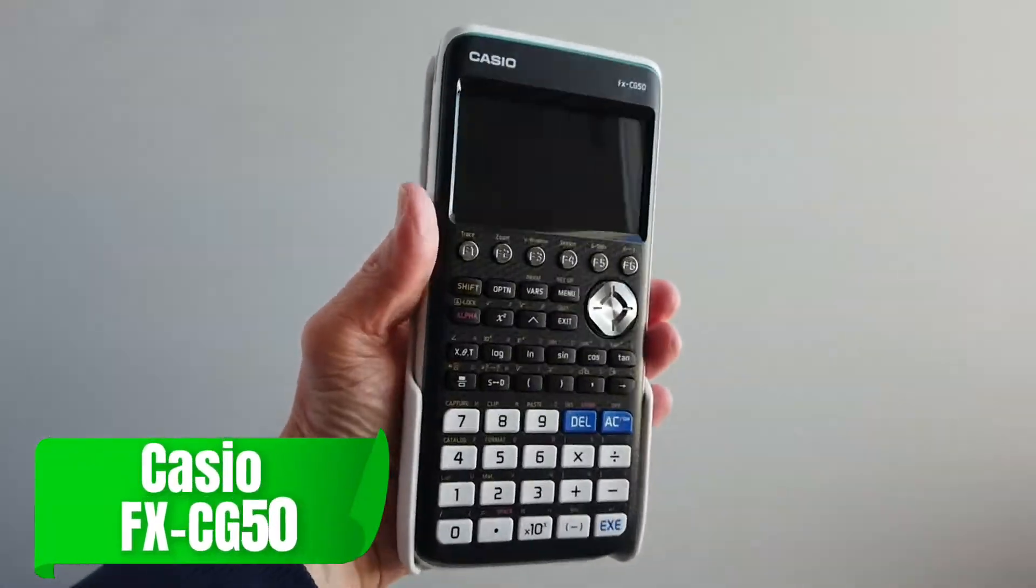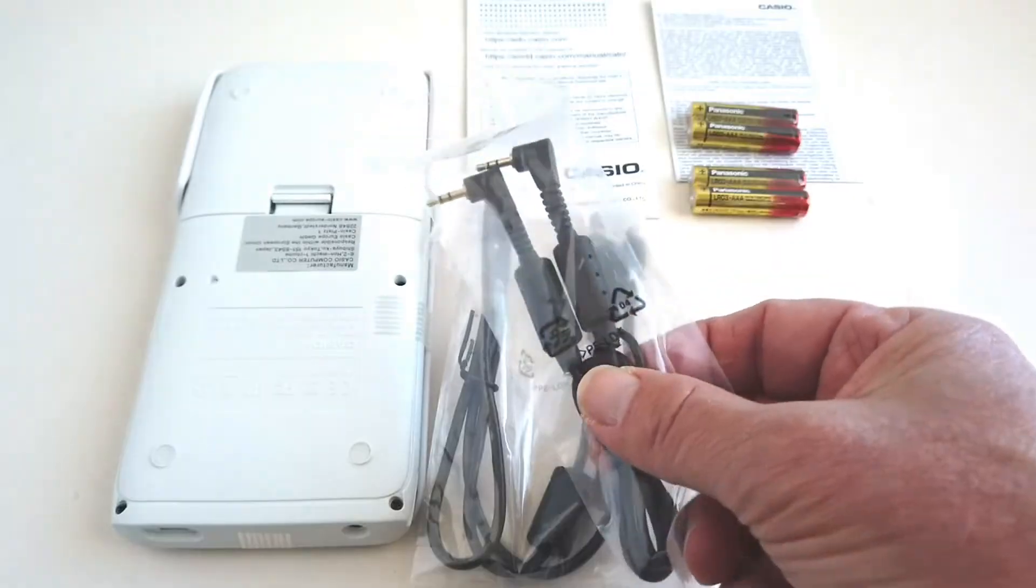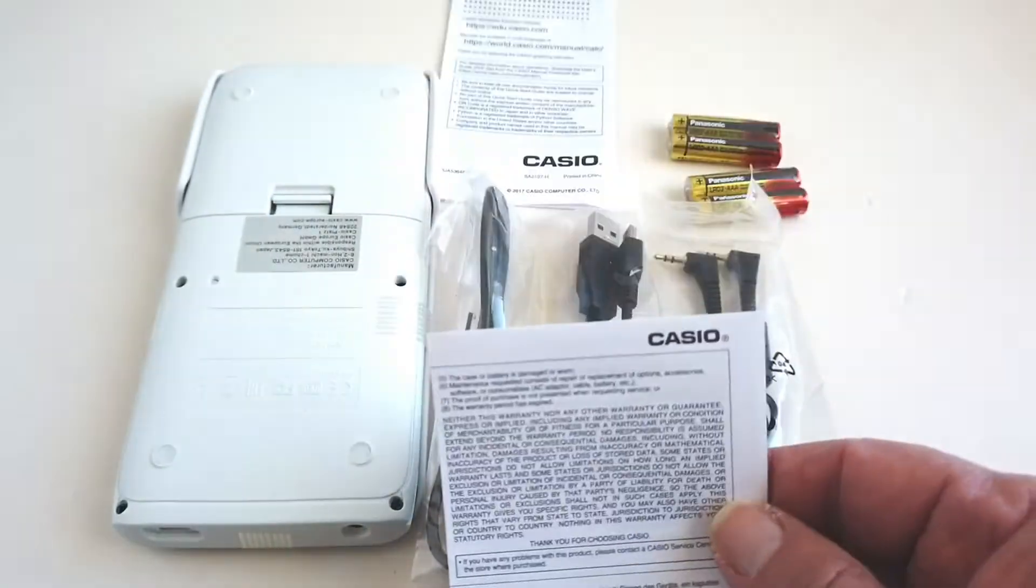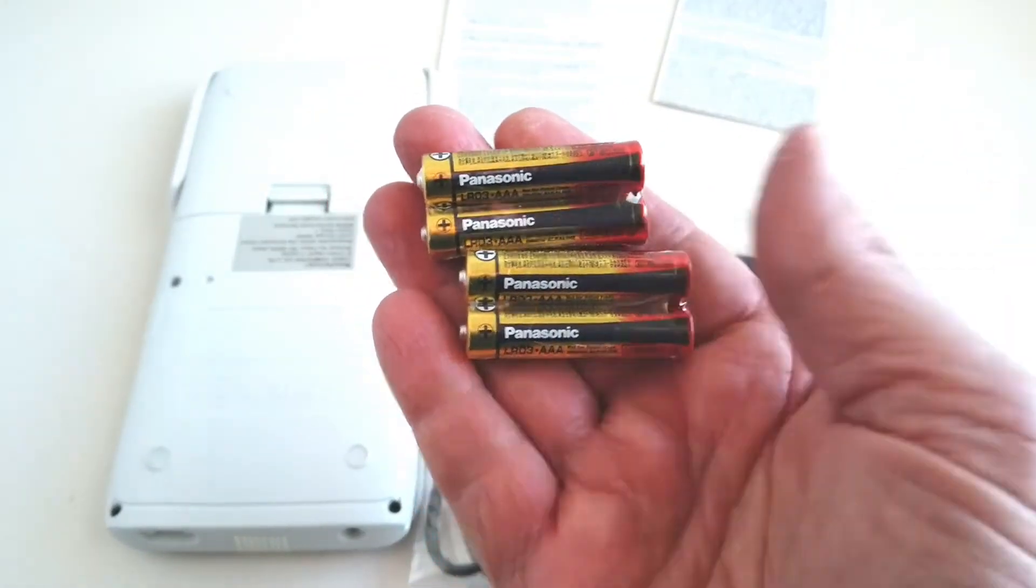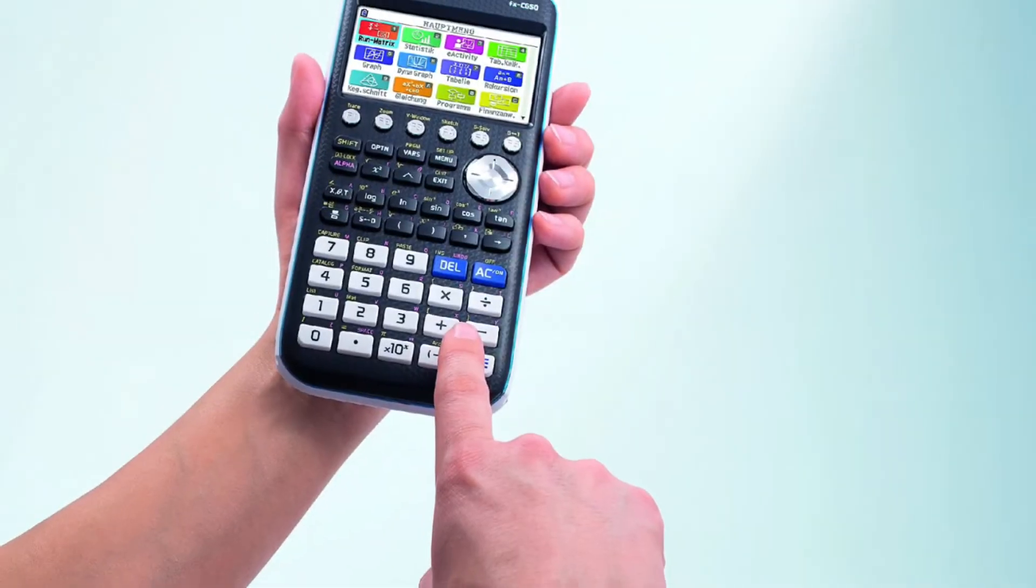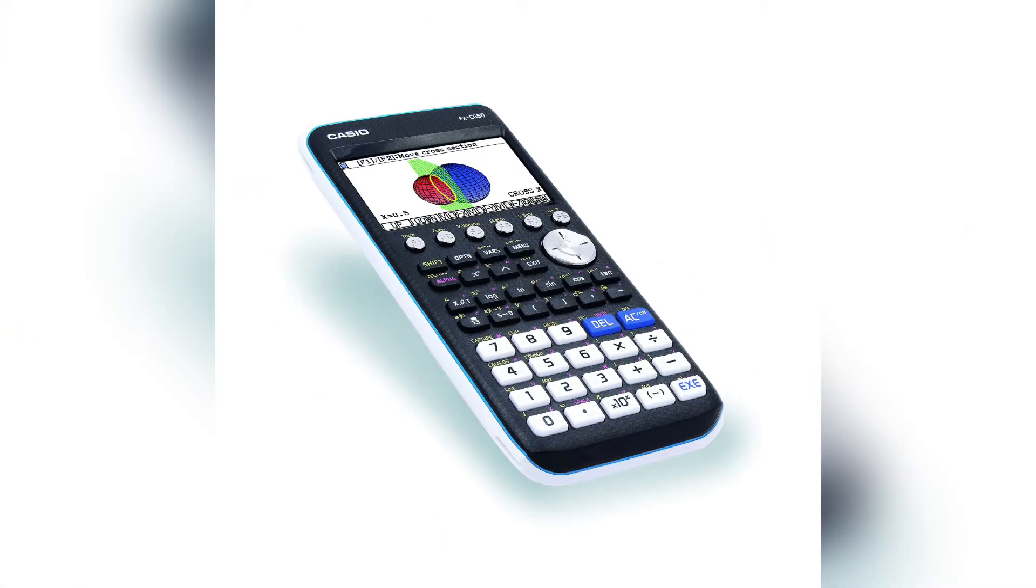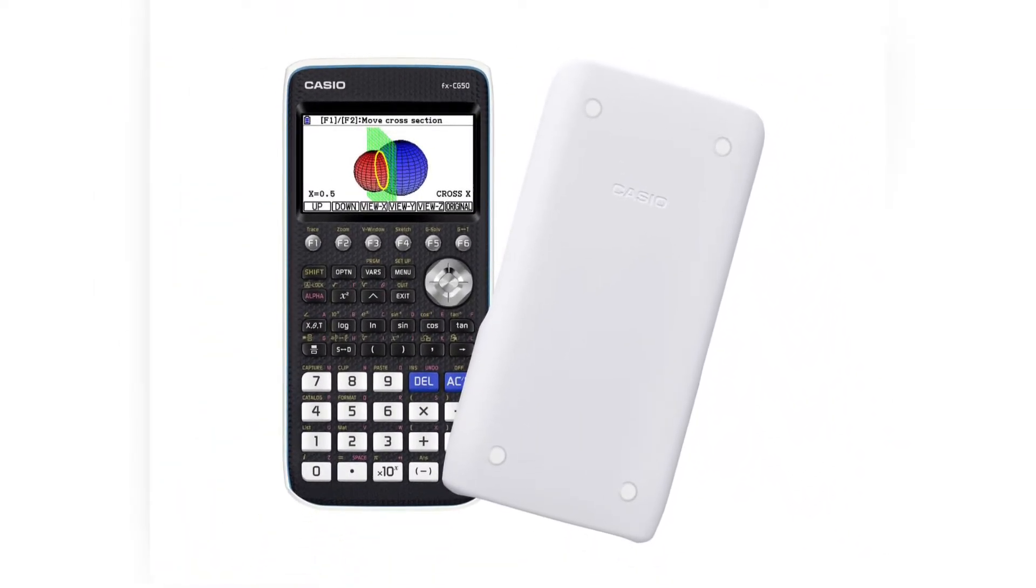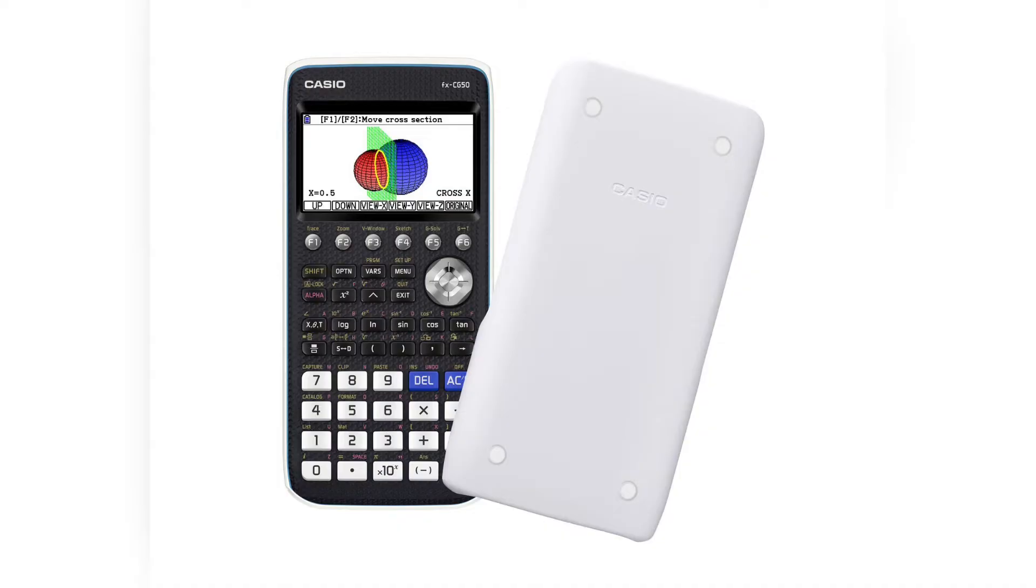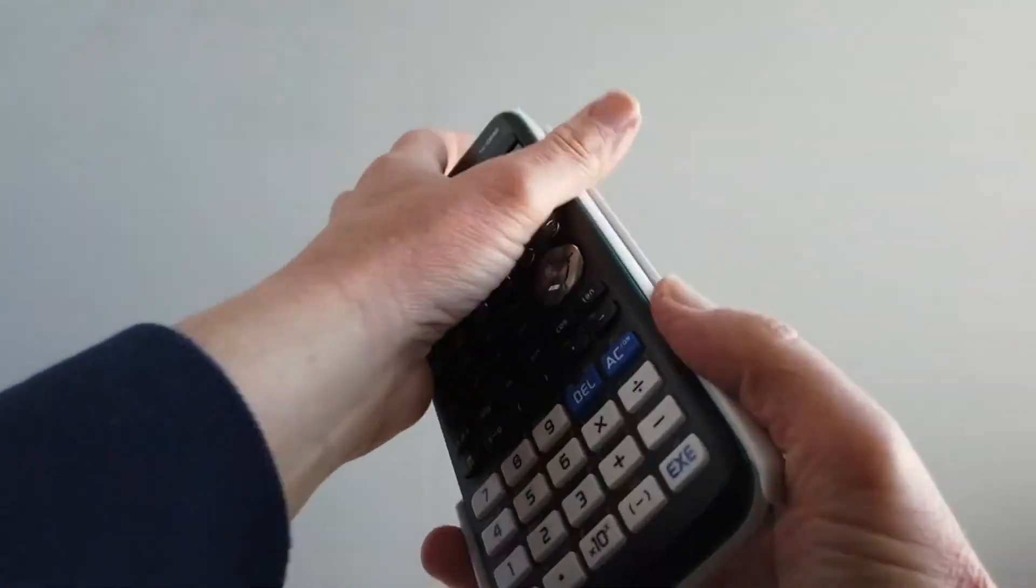At number three, we have the Casio FX-CG50, a powerful graphing calculator that balances high functionality with affordability. It's especially known for its ability to handle 3D graphing, which sets it apart in fields where spatial data and analysis are crucial, such as aerospace and mechanical engineering. If your work involves dealing with 3D vectors or surfaces, this model allows you to visualize them effortlessly. Not only does it perform well for engineers, but it's also a great tool for teaching or learning, making it versatile for a variety of uses.